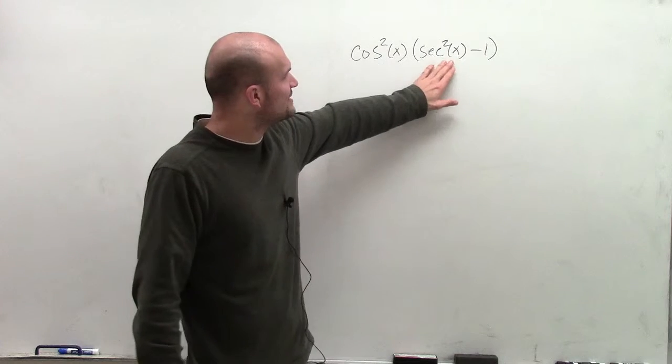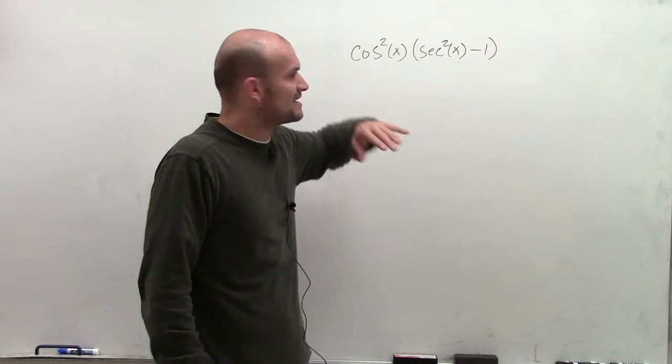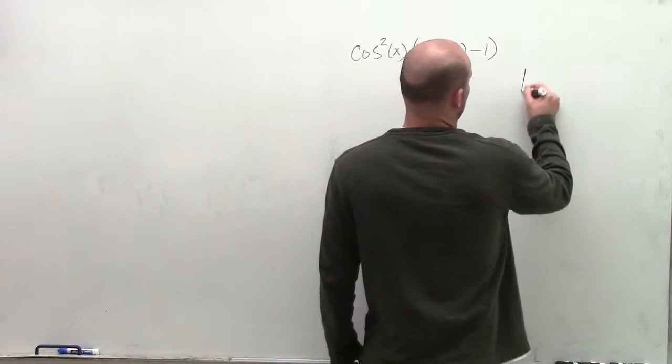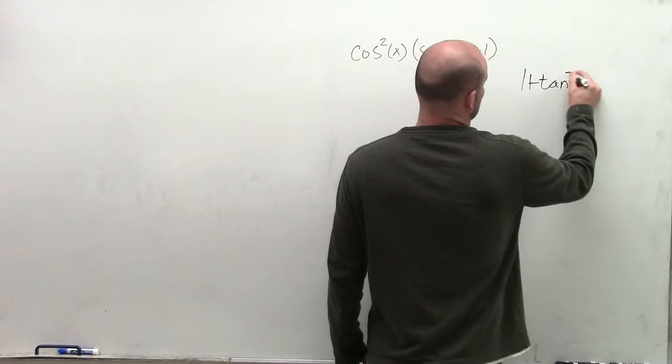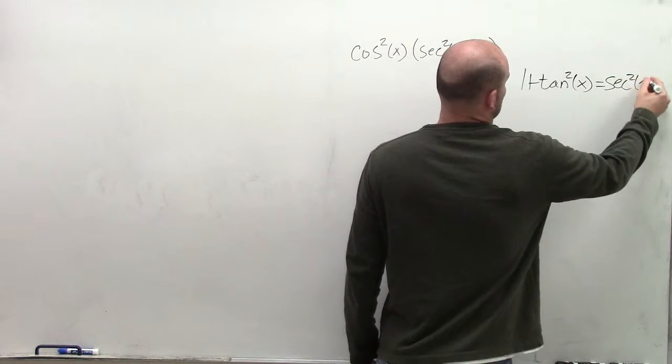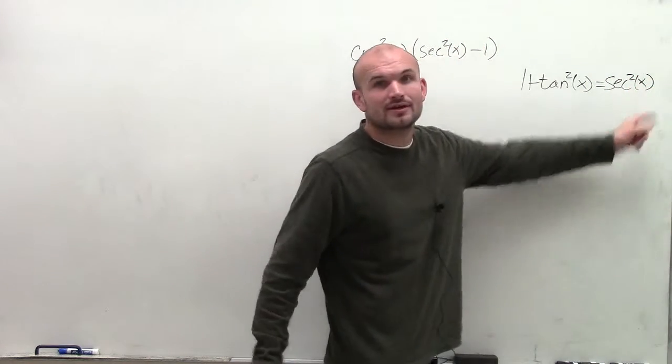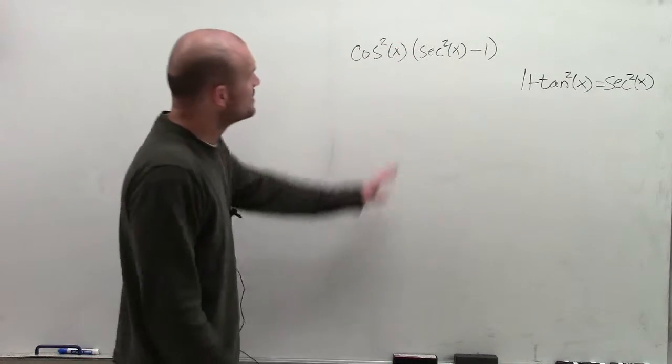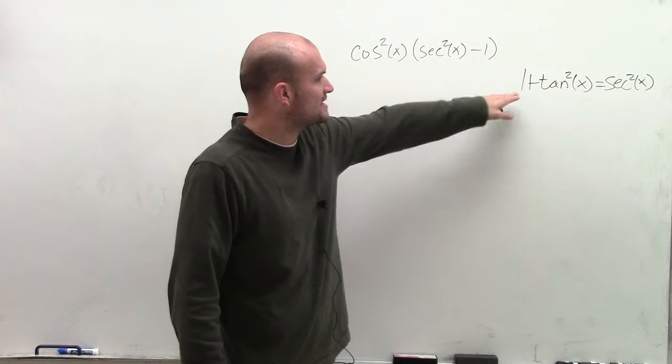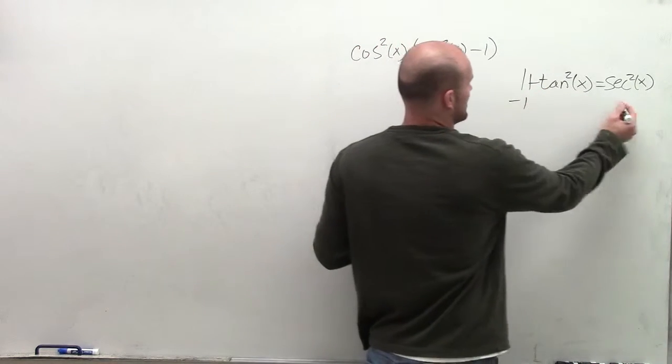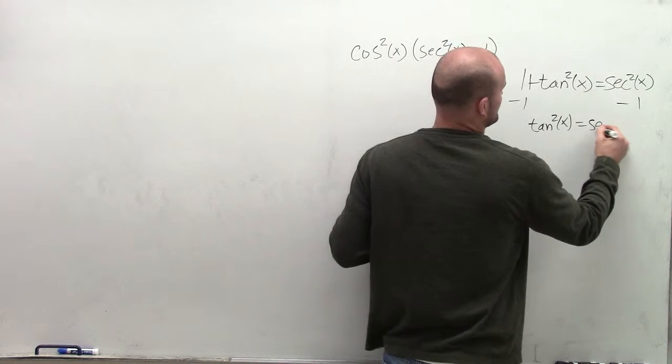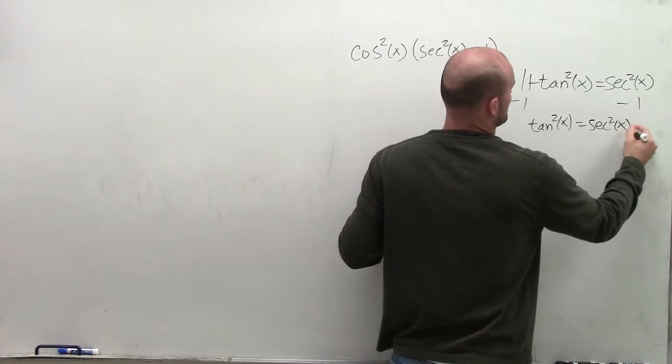However, let's see if we can simplify the secant squared of x minus 1. To do that, we need to remember our trigonometric identity that states that 1 plus tangent squared of x equals the secant squared of x. So if I was to figure out what the secant squared of x minus 1 is, I would subtract the 1 over, and I'd see that tangent squared of x equals the secant squared of x minus 1.